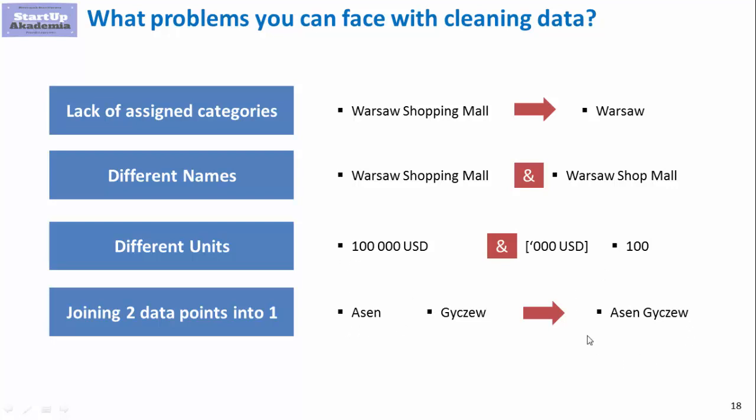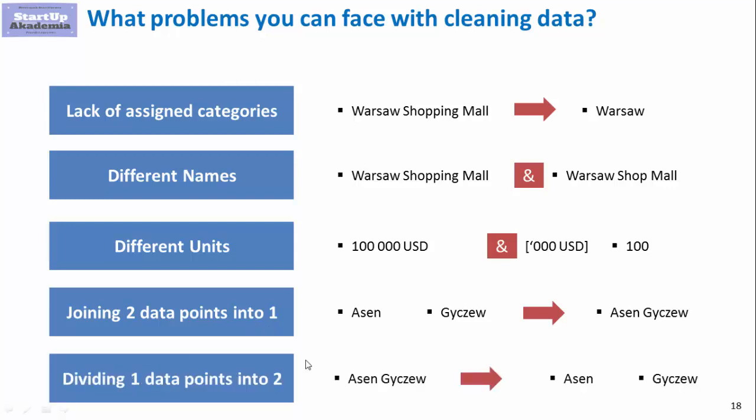Quite often you will be joining two data points into one — for example combining a first name and surname into one unique field — or doing the reverse: splitting one data point into two separate columns. These are the most common tasks in the data preparation phase, which you do before analysis to ensure you don't get bad results from poor data quality.